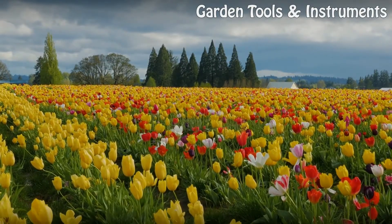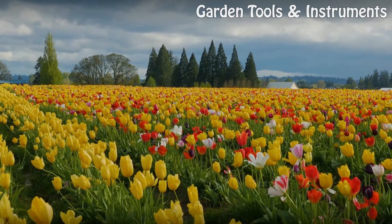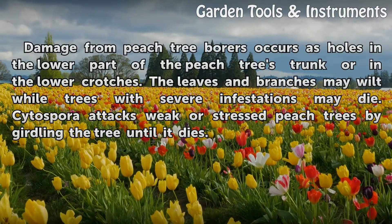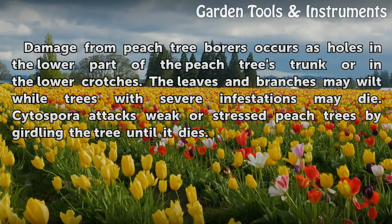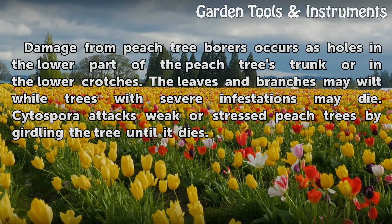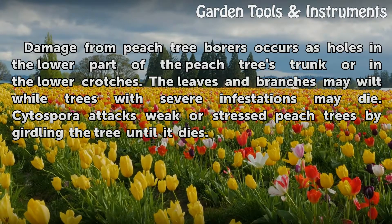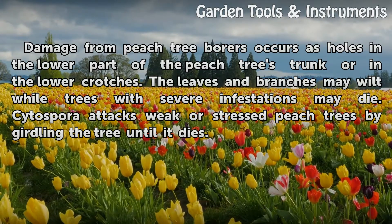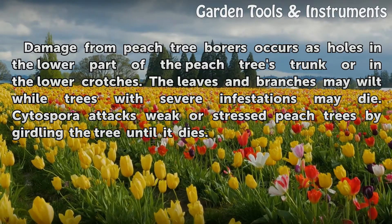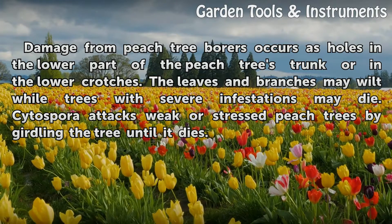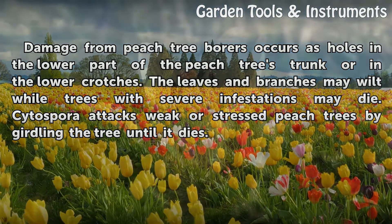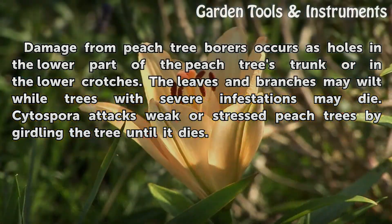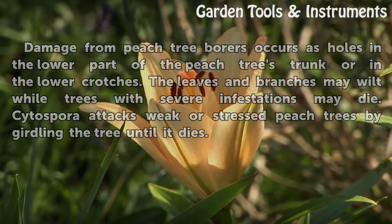Damage. Damage from peach tree borers occurs as holes in the lower part of the peach tree's trunk or in the lower crotches. The leaves and branches may wilt, while trees with severe infestations may die. Cytospora attacks weak or stressed peach trees by girdling the tree until it dies.